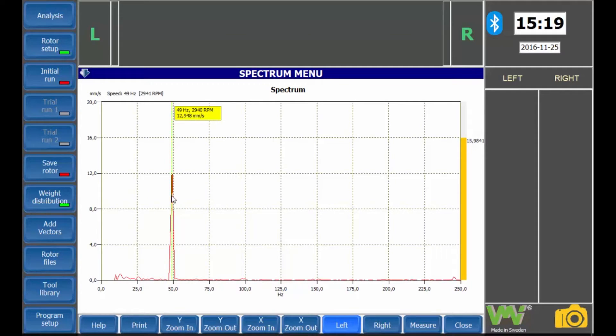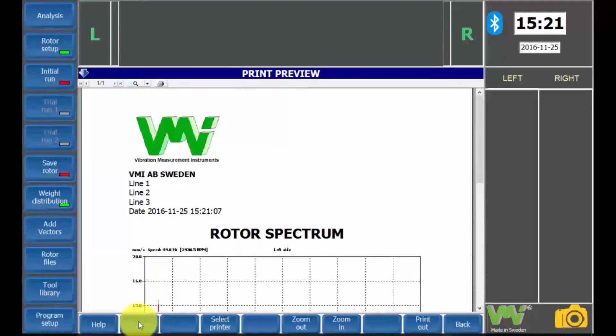If the high amplitude of vibration was at a different frequency than the rotation speed, it is advisable to examine the machine for anything other than unbalance, such as misalignment or looseness. We can obtain these measurements for both the left and the right plane. These results can also be printed or be saved as a PDF file.